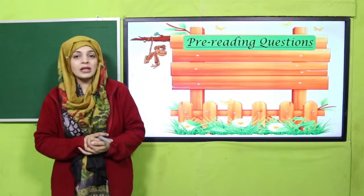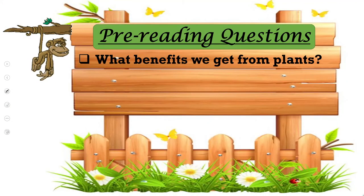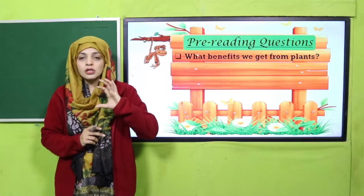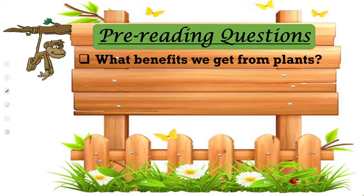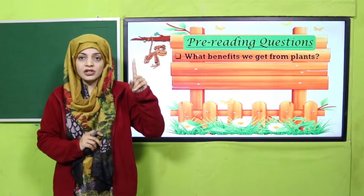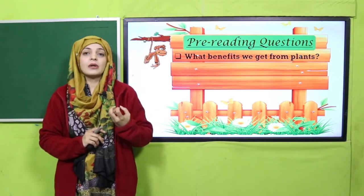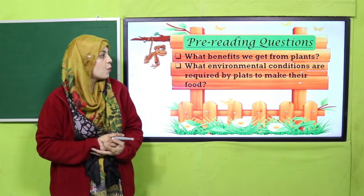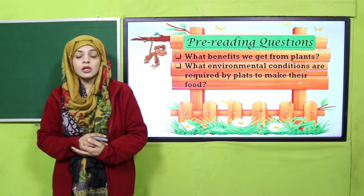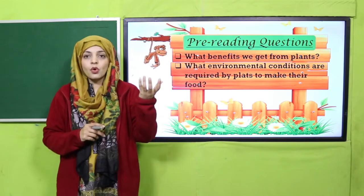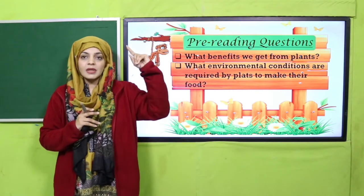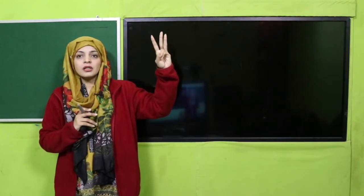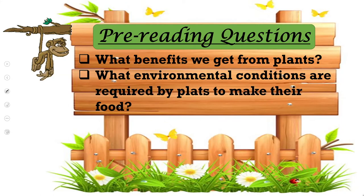Let's move forward to the pre-reading questions. What benefits do we get from plants? You can pause the video and think. Plants give us oxygen, food, and shelter. What environmental conditions are required by plants to make their food? A plant needs sunlight, air, water, soil, and an appropriate temperature to prepare its own food.